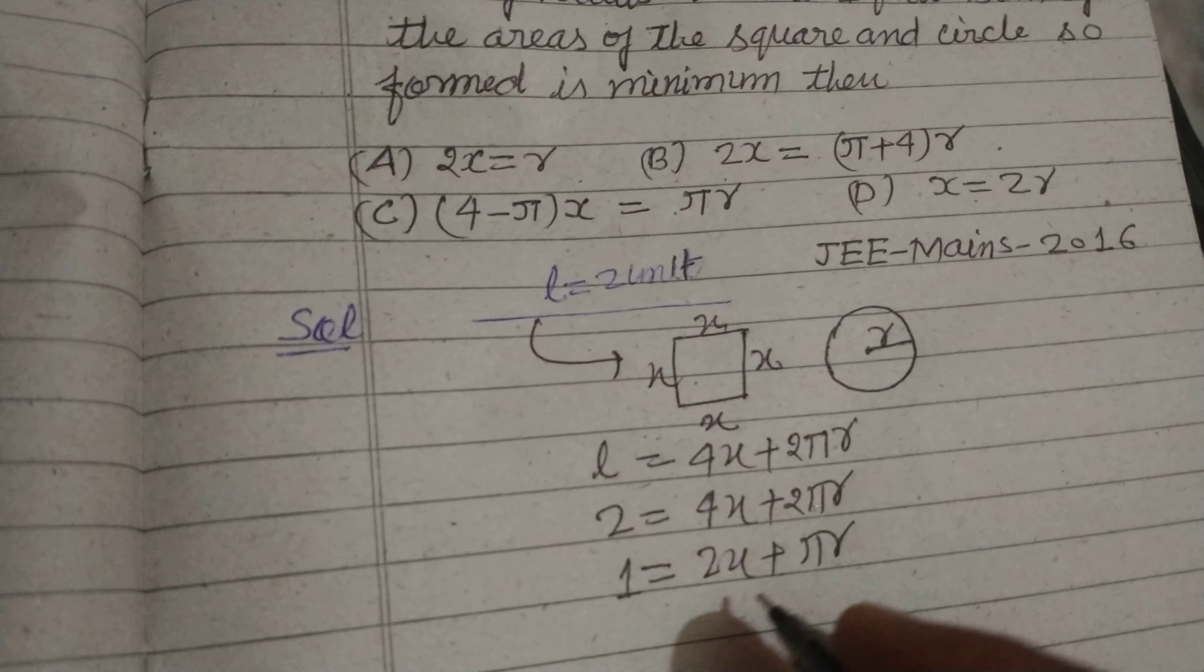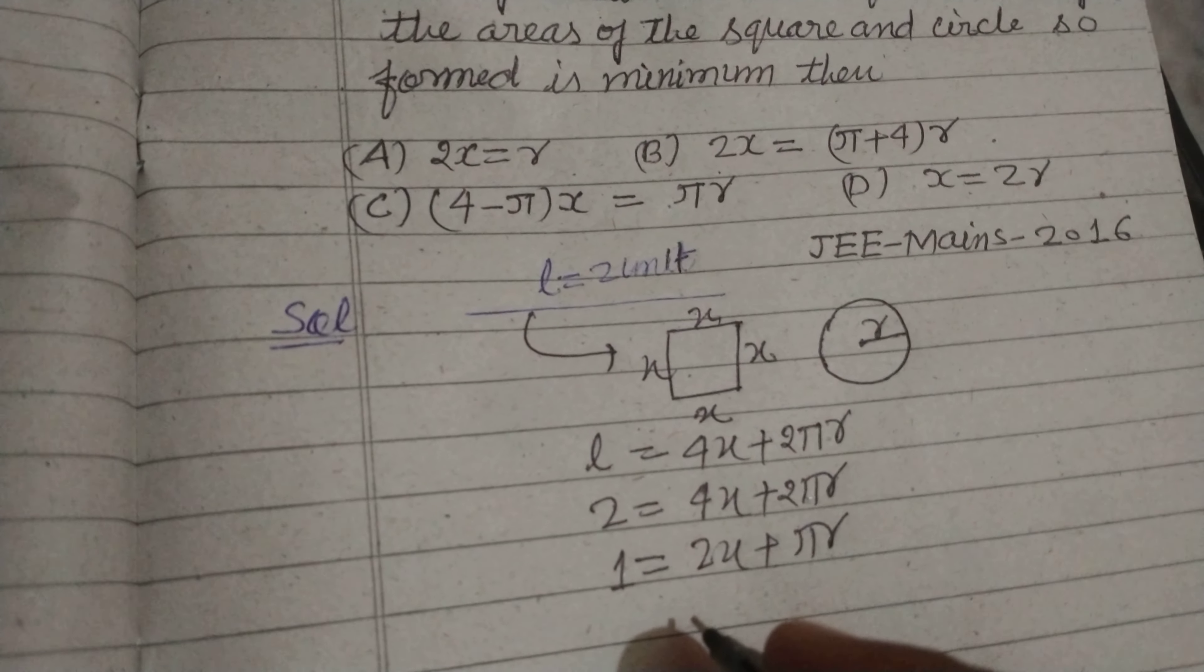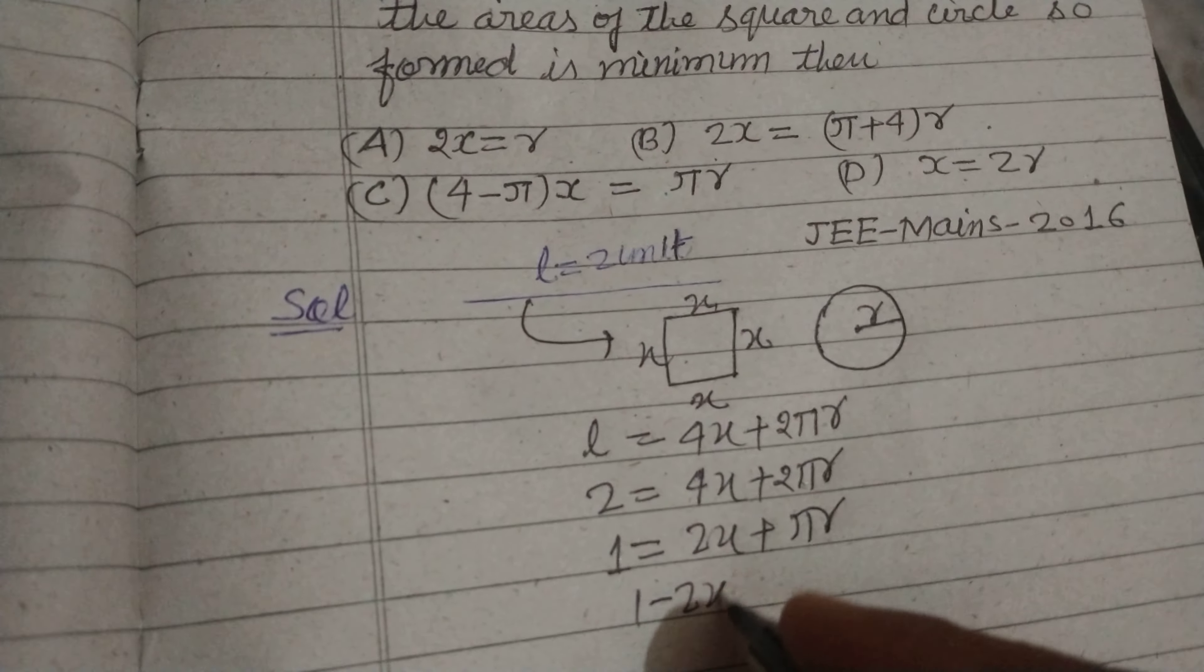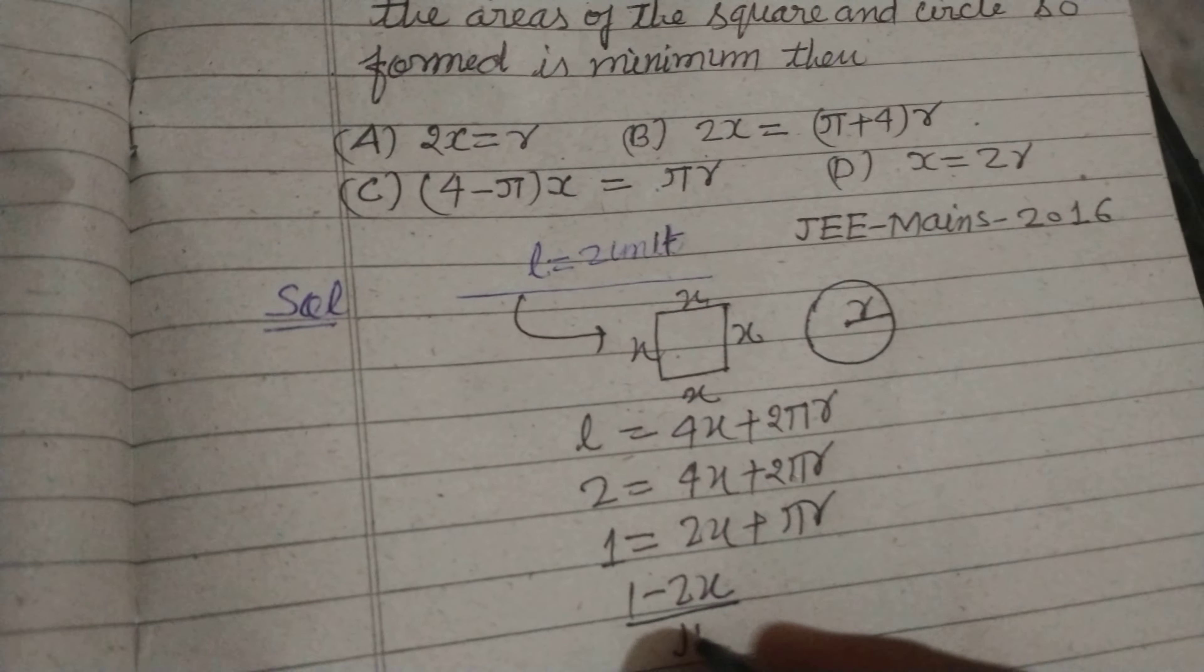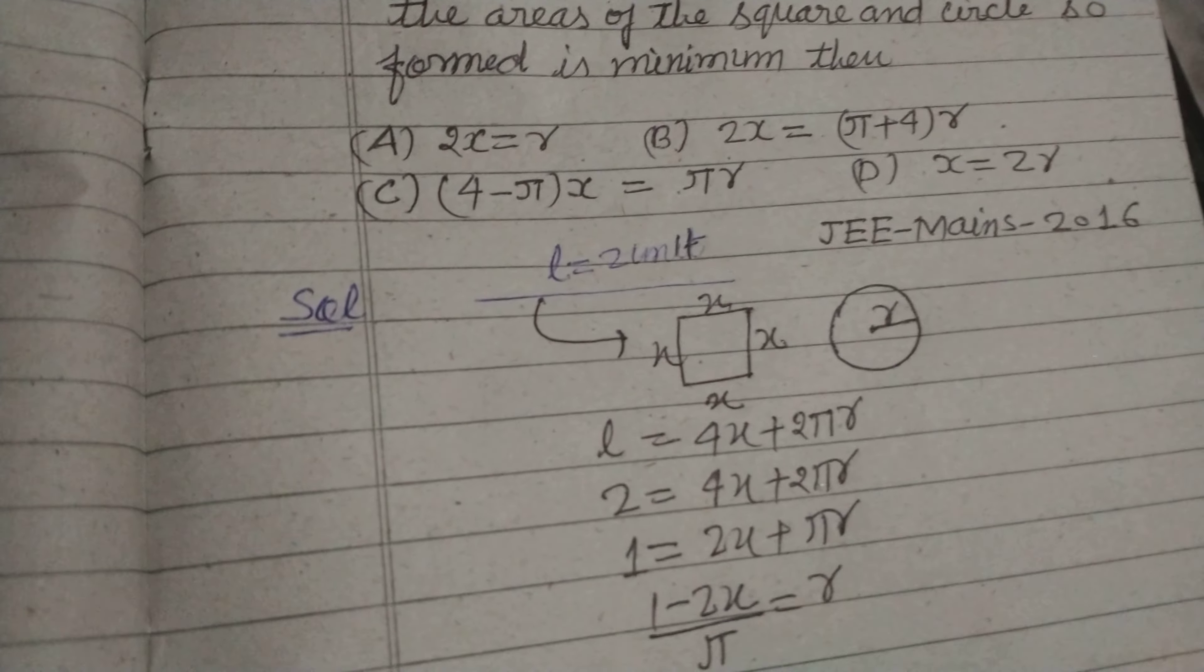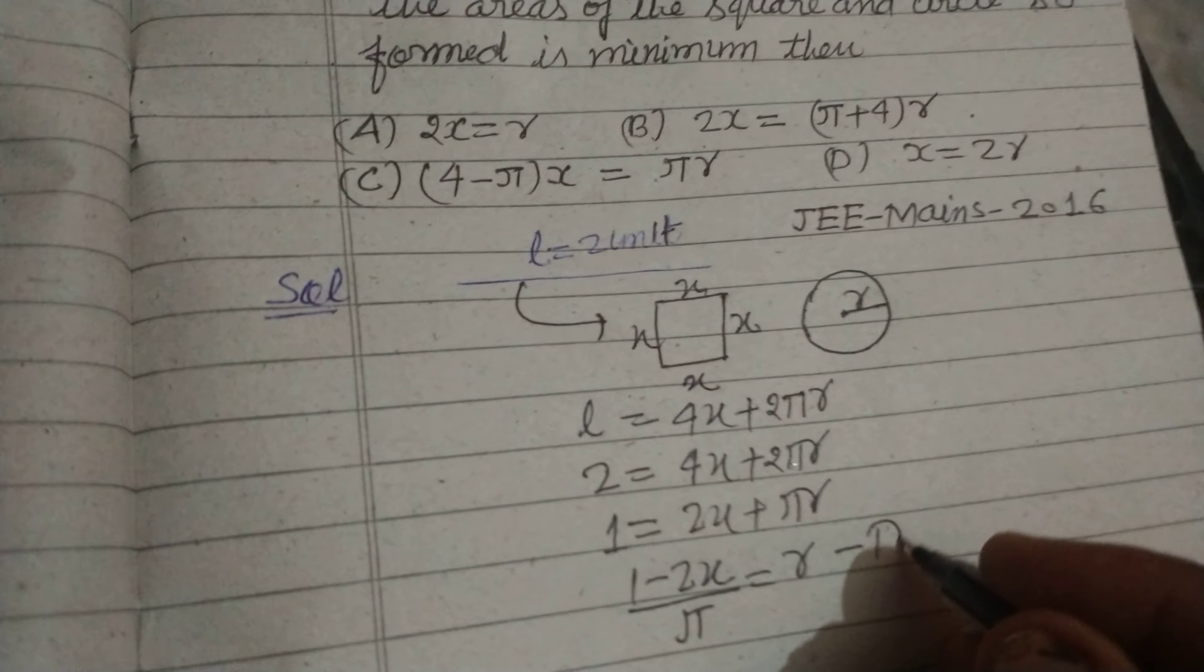So from here we take (1 - 2x)/π = r. This is our equation first.